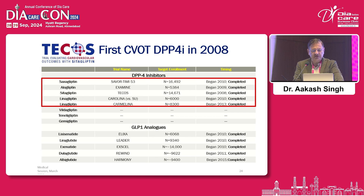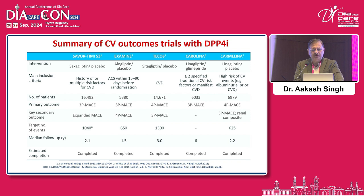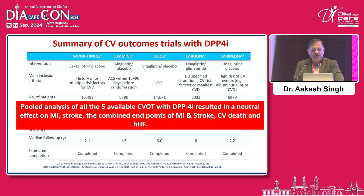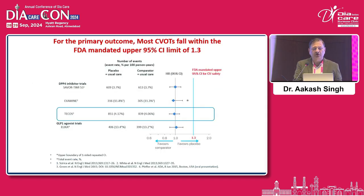These were the trials done with DPP-4 inhibitors: SAVOR-TIMI, EXAMINE, TECOS, Carolina, and Carmelina. The summary of CV outcome trials — a pooled analysis of all five available CV-OT trials with DPP-4 inhibitors — resulted in a neutral effect on MI, stroke, and the combined endpoints of MI, stroke, CV death, and hospitalization for heart failure. The outcomes were neutral overall. All CV-OT trials fell within the FDA-mandated upper 95% confidence limit of 1.3 for the primary outcome.